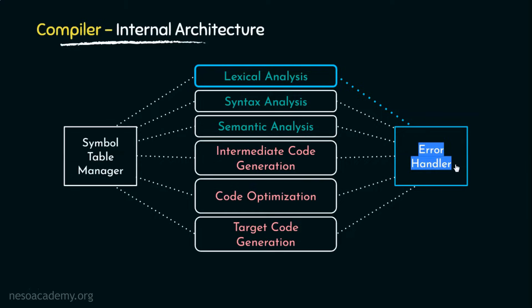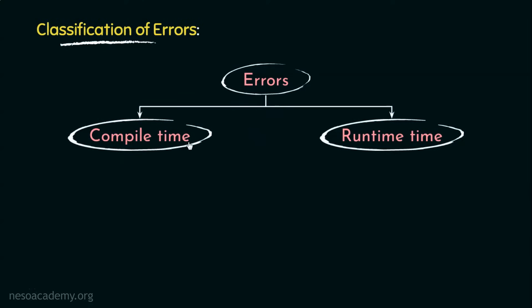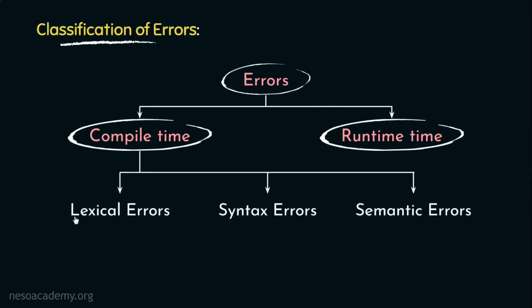Errors can broadly be classified into two categories: compile-time errors and runtime errors. Runtime errors take place during the execution of the program code — insufficient available memory space, unexpected errors, etc. are examples of runtime errors. Compile-time errors occur during compile time, that is before the execution of the program. Compile-time errors are of three types: lexical, syntax, and semantic errors.